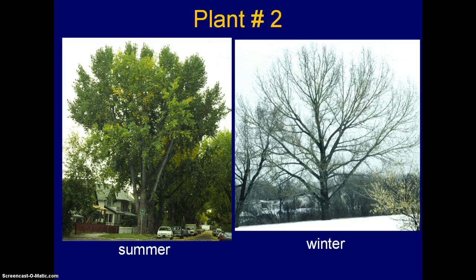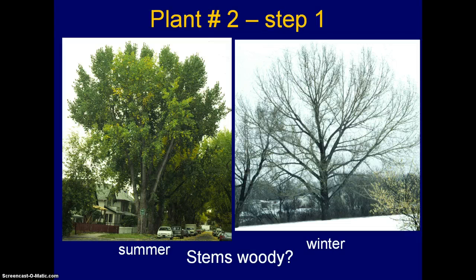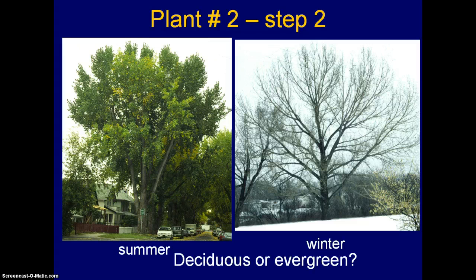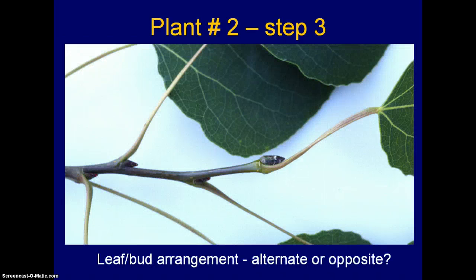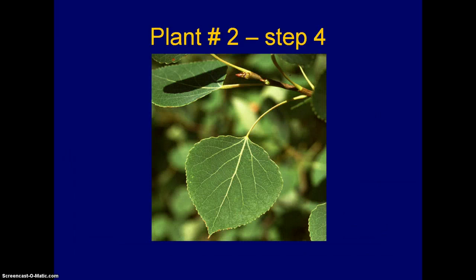Plant number two. The summer and winter shots again help you determine whether stems are woody — I think it's fairly obvious — and also determine whether it's deciduous or evergreen. This picture gives you lots of information about whether the leaves are opposite or alternate in terms of arrangement. If you take a close look at this next picture you should be able to determine whether you have compound or simple leaves.